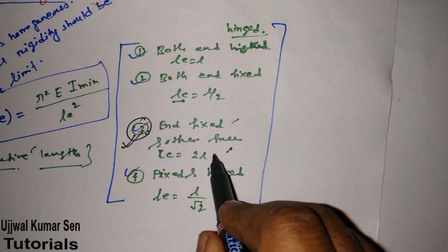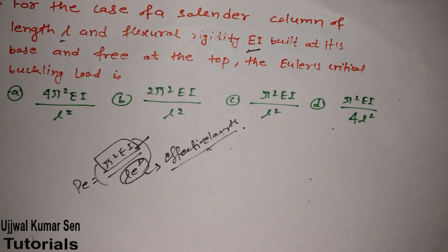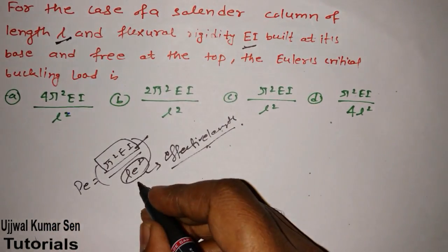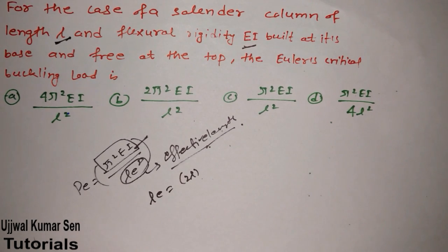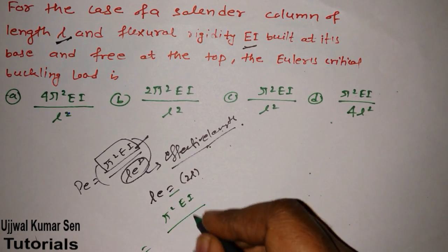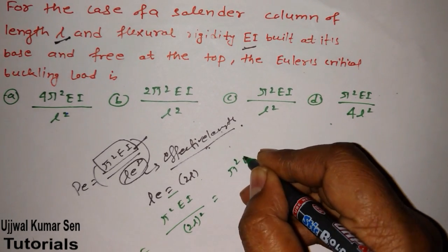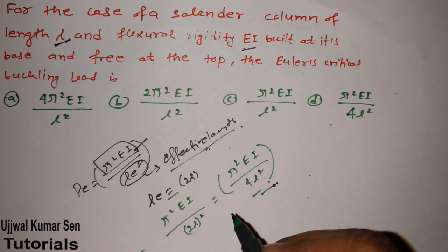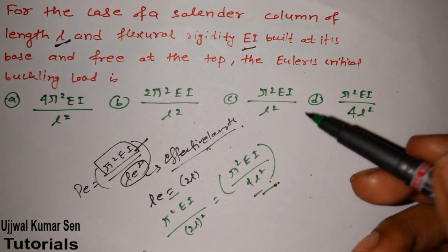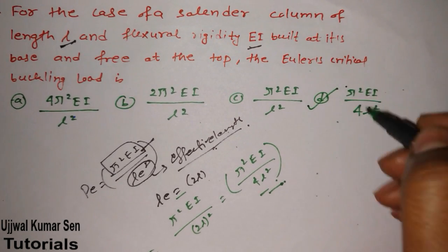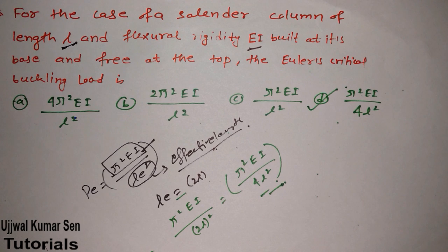Since one end is fixed and the other is free, the effective length Le = 2L. Substituting into the formula: Pe = π²EI / (2L)² = π²EI / 4L². So the Euler's critical buckling load is π²EI / 4L², which corresponds to answer option D. I hope you understand this concept and solution.